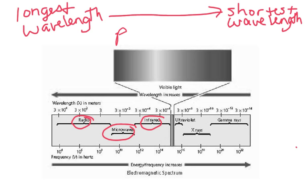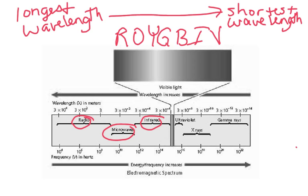It goes ROYGBIV. From longest wavelength in the colors, it's red, orange, yellow, green, blue, indigo — which is like a blue-purple — and violet. You do need to know the order of those colors from longest to shortest. If you have the black and white picture, write ROYGBIV on top so you know. When you get to the quiz, quickly write down the order from longest to shortest including the colors, and then you'll be fine.